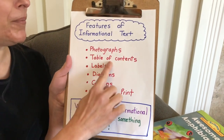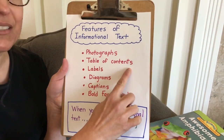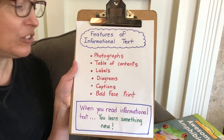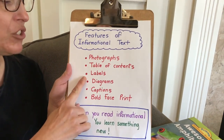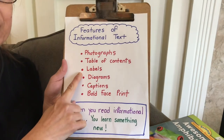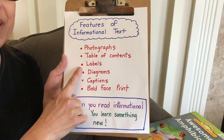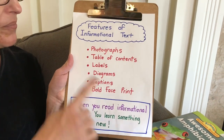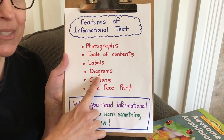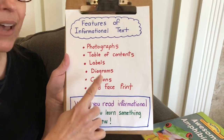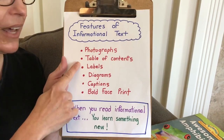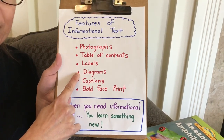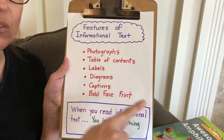Another feature of informational text is table of contents. That tells what's in a book. The next feature is sometimes there are labels. Labels tell about the picture. Another feature is diagrams. We haven't talked a lot about those. They're a lot like labels, but diagrams usually show you a sequence of something, of how something goes in order.